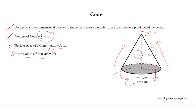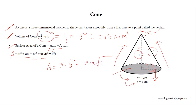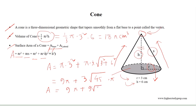It is given that the radius for this cone is 3 centimetres and the height is 6 centimetres. Therefore the volume of the cone equals one third of pi times 3 squared times 6, which results in 18 pi cubic centimetres. The surface area of the cone equals pi times 3 squared plus pi times 3 times the square root of 3 squared plus 6 squared, which equals 9 pi plus 3 times the square root of 45 times pi, resulting in 9 pi plus 9 square root of 5 times pi square centimetres.